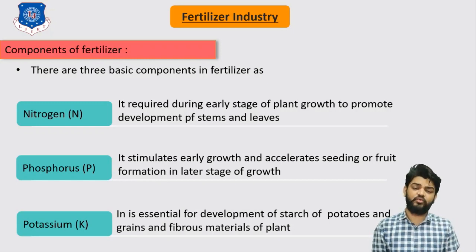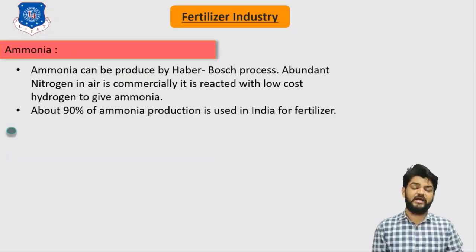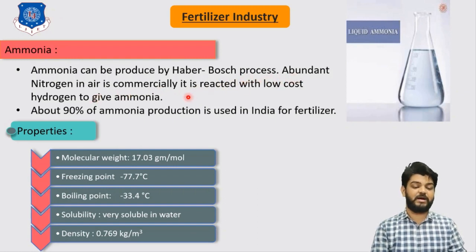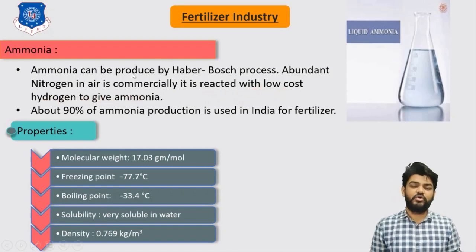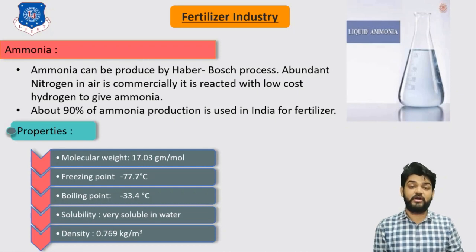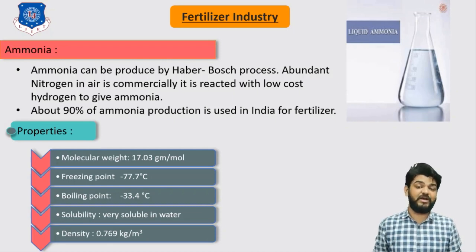Now we will discuss some of the major chemicals associated with this fertilizer industry, starting with nitrogen-based components. Firstly, ammonia — ammonia is one of the largely used chemicals and can be produced by the Haber process. The abundant amount of nitrogen in air is reacted commercially with low-cost hydrogen to give ammonia. This makes the production of ammonia very economical, since nitrogen is available in large quantities.